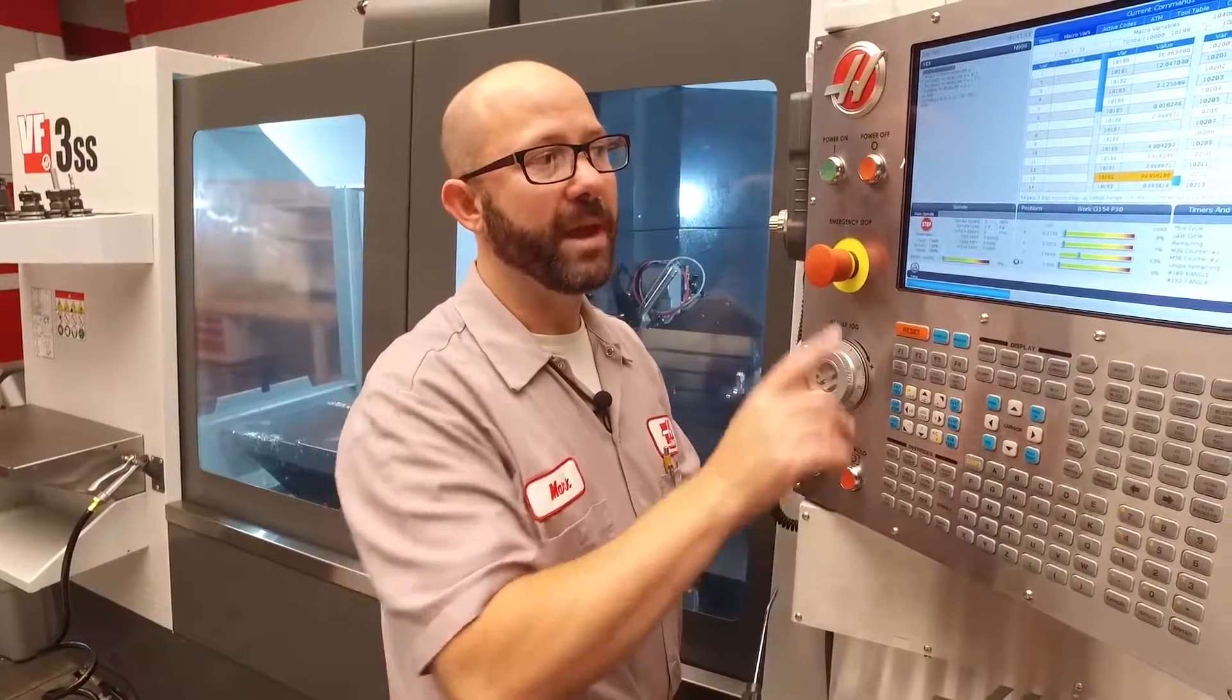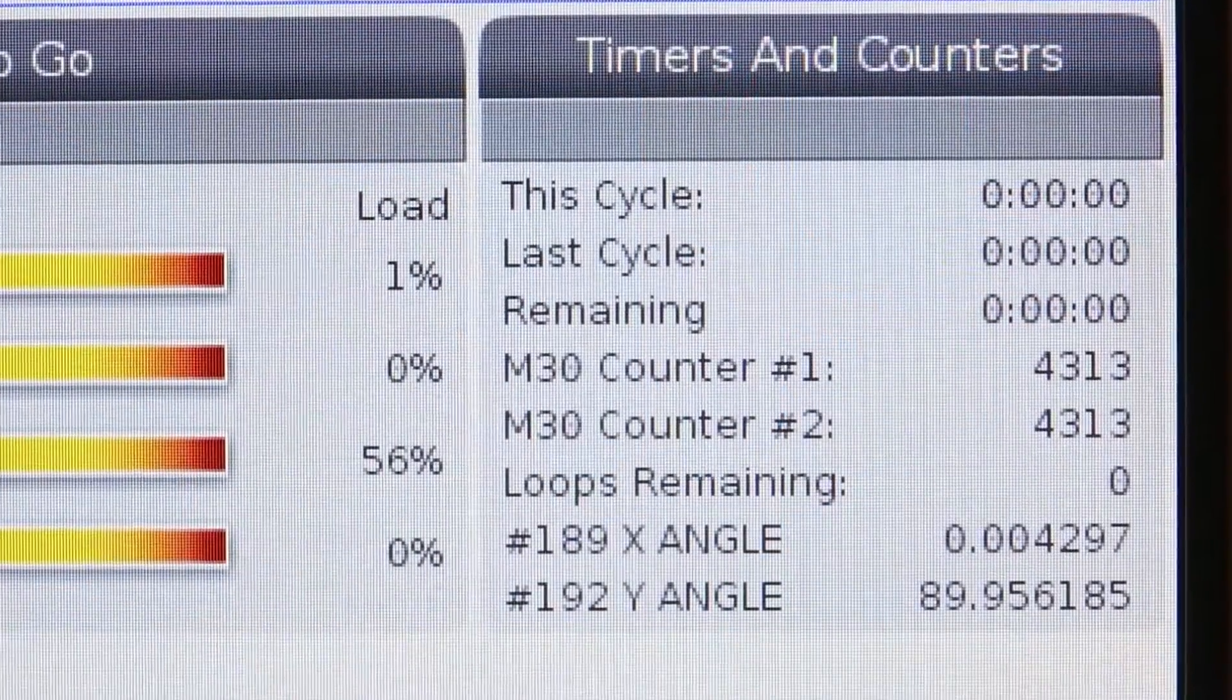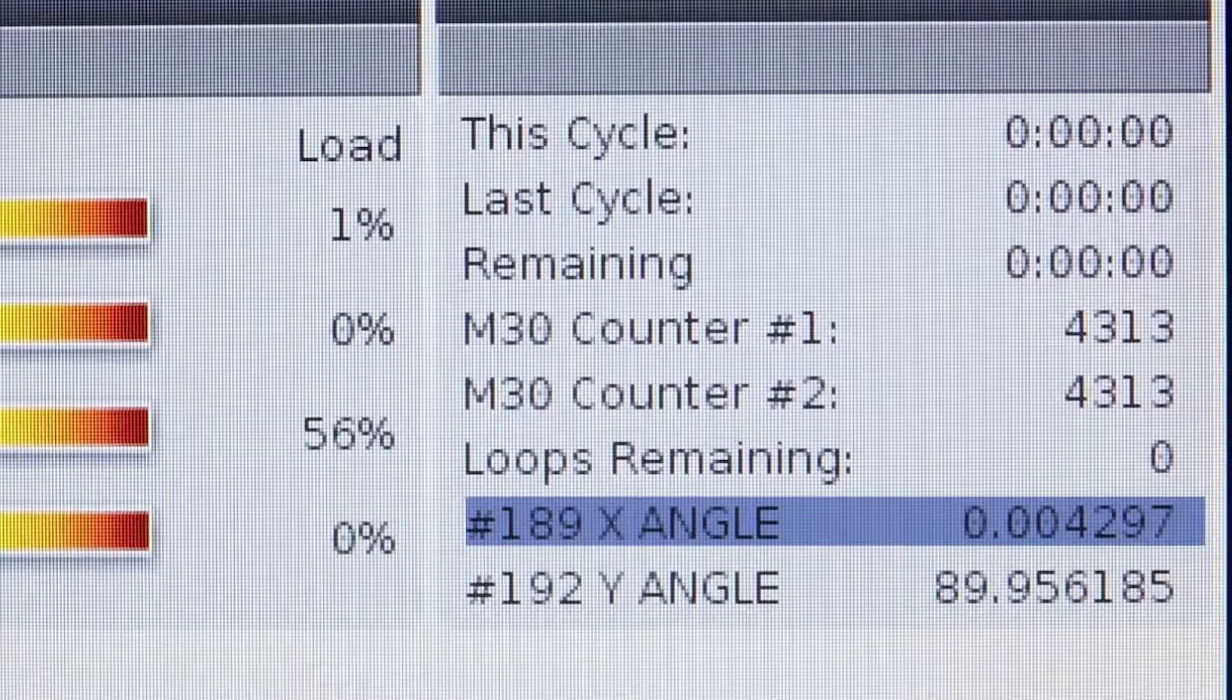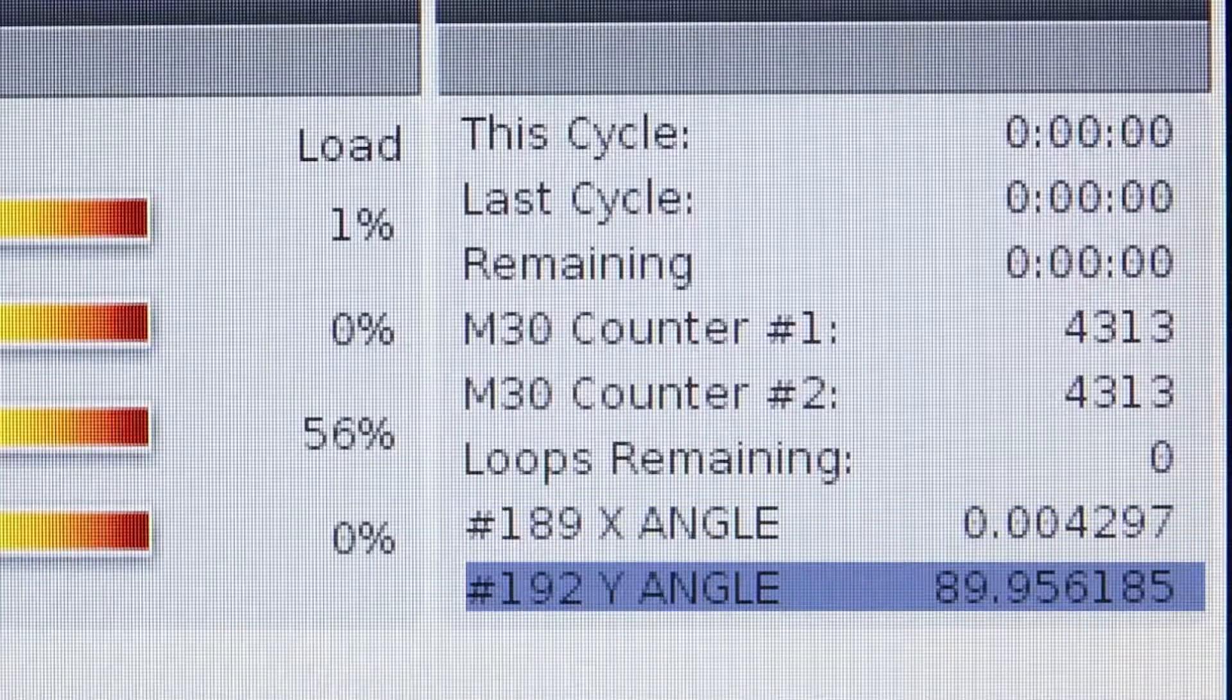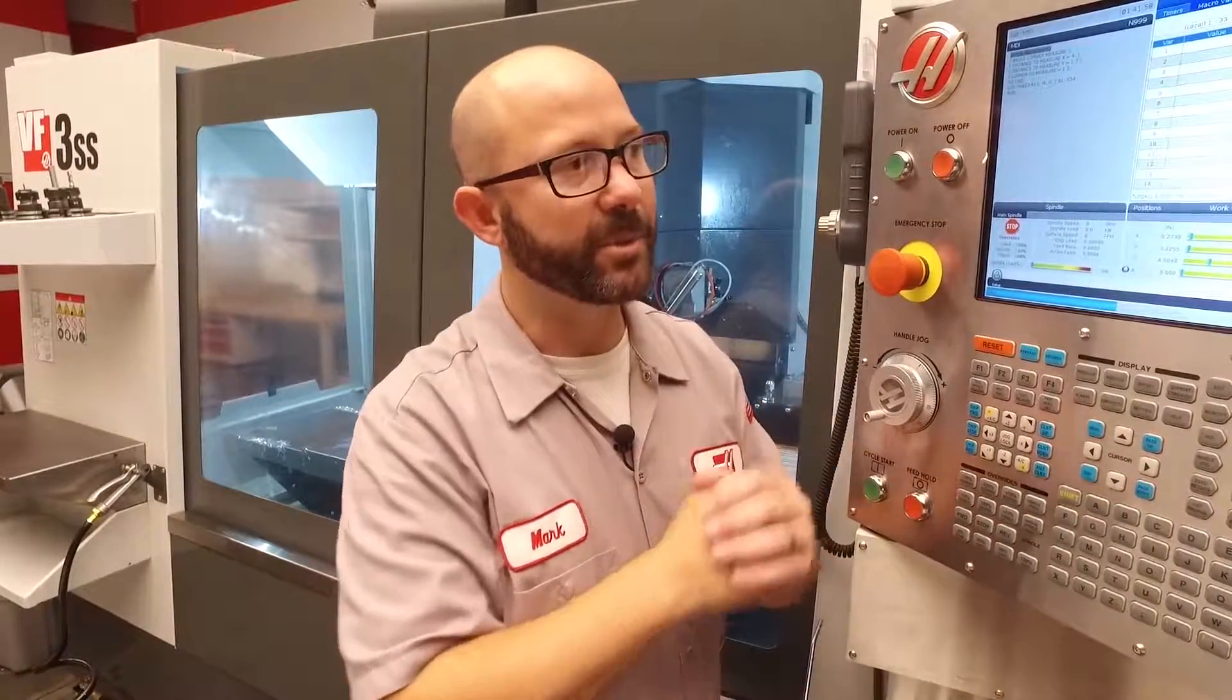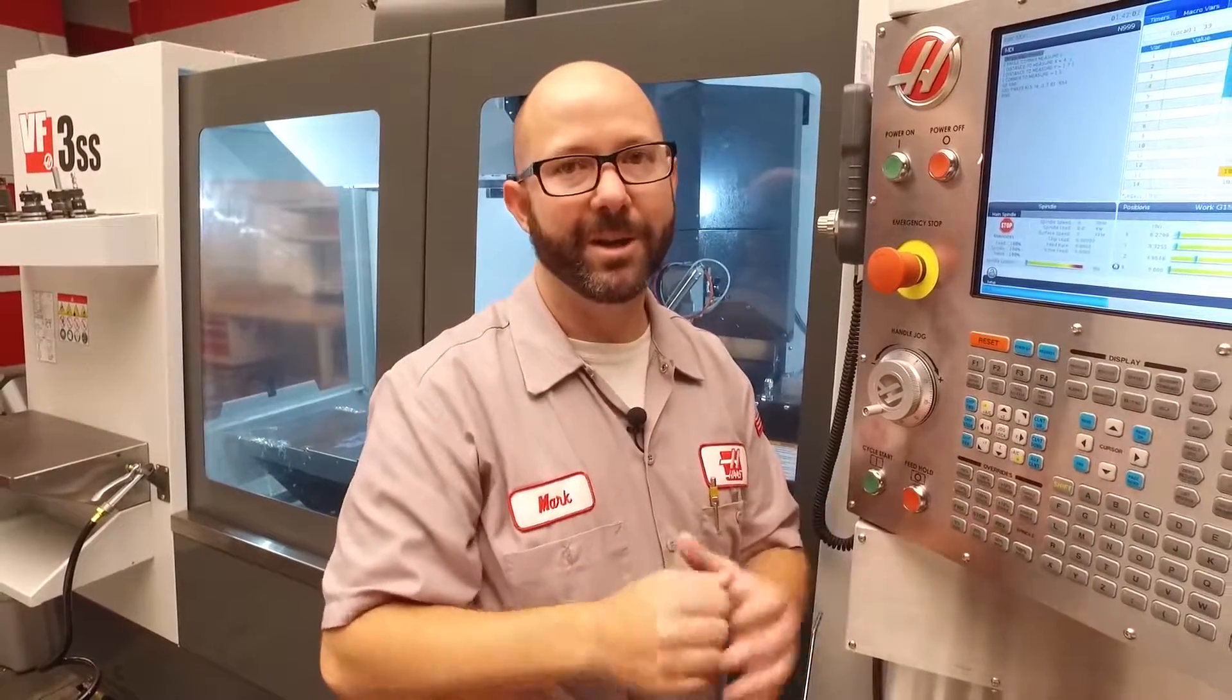I don't want to look at the macro variable page every time I want to see what my angles are. So, I've actually set up my timers and counters page to display 189 X angle and 192 Y angle. For more help setting up your macro labels, check out our timers and counters video. We've made an entire video that shows you how to set up those labels.